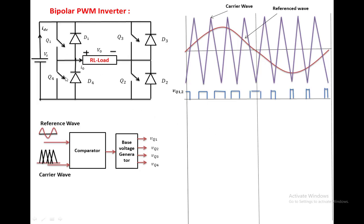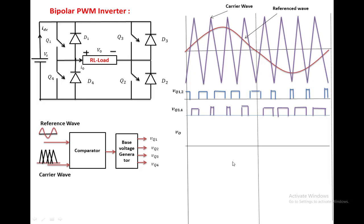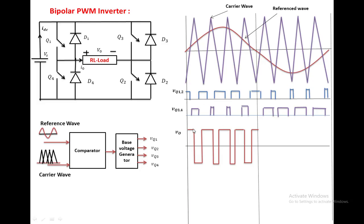For Q3 and Q4, the base voltage is generated only when the carrier wave is greater than the reference wave, which happens in those corresponding durations. If we draw the output voltage waveform: when Q1 and Q2 are on, the output voltage is positive; when Q3 and Q4 are on, the output voltage becomes negative. The output voltage oscillates between plus Vs and minus Vs.